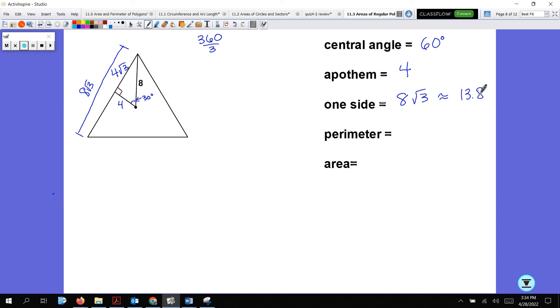The perimeter, 8 root 3 times 3, which is 24 root 3, is 41.6. We can go down to one-half times the apothem times the perimeter. This is the area: one-half times 4 times 41.6, which is 82.8 inches squared. That's how we do it. It's not so bad. Special right triangle. Maybe you can do a little video on that to give yourself a refresher.